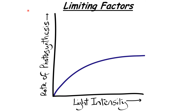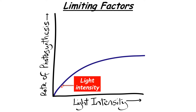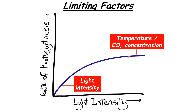When looking at limiting factors we often see graphs with rate of photosynthesis on the y-axis and the limiting factor on the x-axis. On a light intensity graph: where the graph is increasing, light intensity is the limiting factor because increasing it raises the rate. Where the graph levels off, light intensity is no longer limiting — so the limiting factors at that point would be temperature or carbon dioxide concentration.